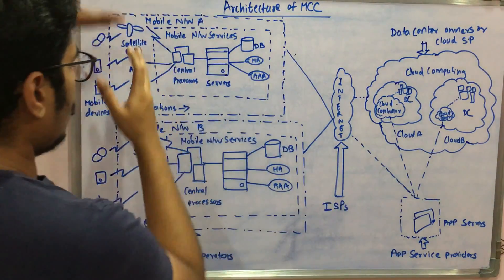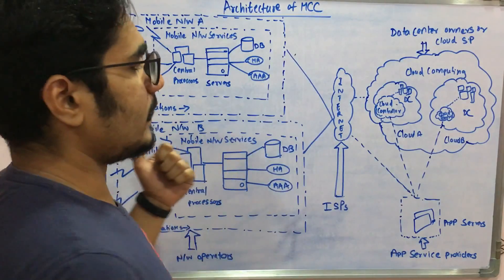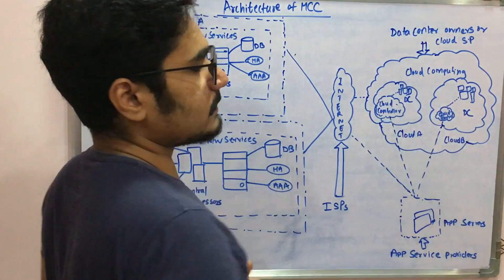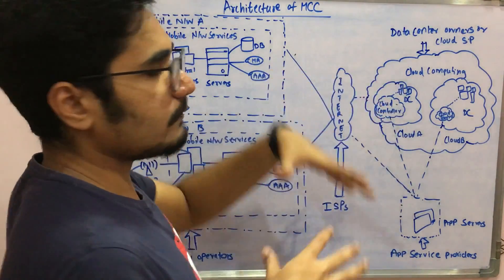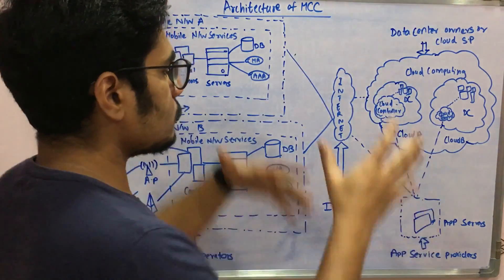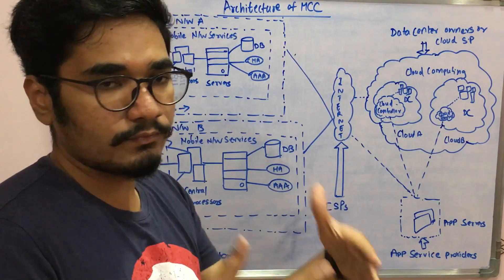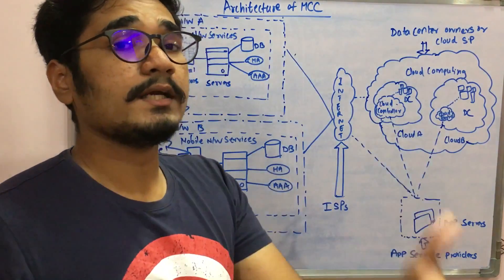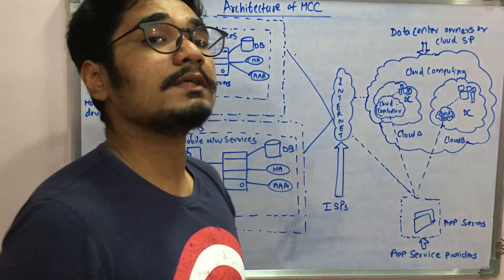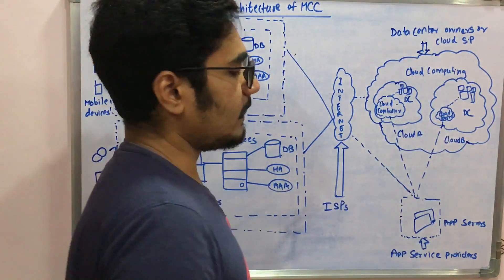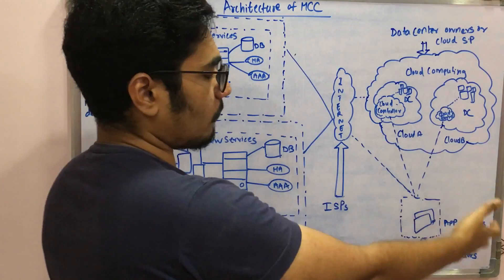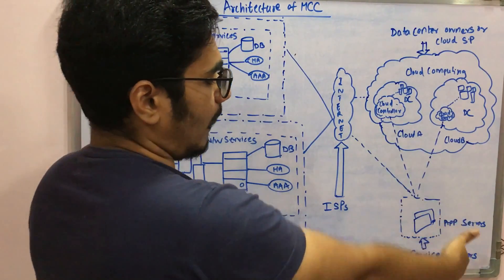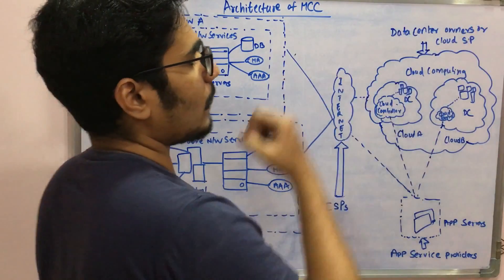Since everything is managed by service providers, you have the internet service provider for the internet. For cloud computing or for providing cloud services you have the cloud service provider, and for the application servers you have the app service, that is the application service provider.